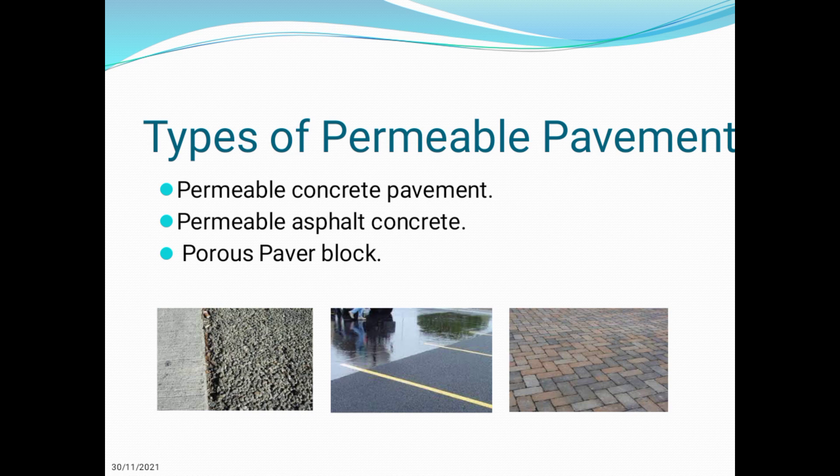The third type is porous paver block. Porous pavers present a surface with holes which can be filled with vegetation or aggregate, depending upon the need. On the other hand, permeable pavements present a solid surface but allow natural drainage.